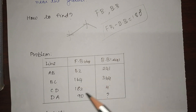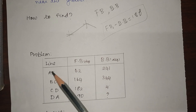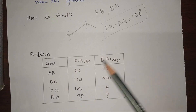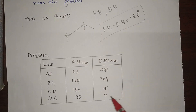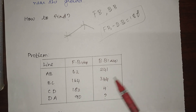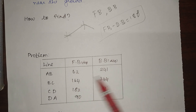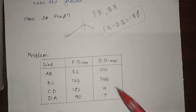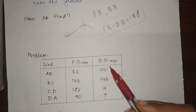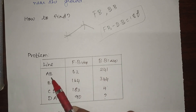I have lines AB, BC, CD, and DA — a closed traverse because it starts and ends at A. I have the fore bearing and back bearing for each line, and I have to find the back bearing of line DA. The first step is to find the difference between fore bearing and back bearing for each line.